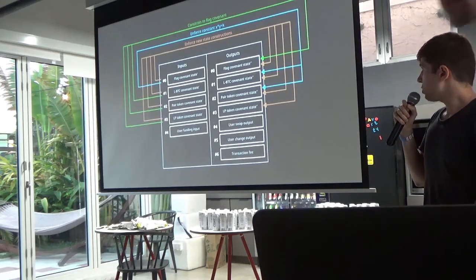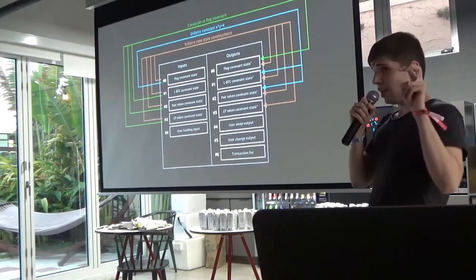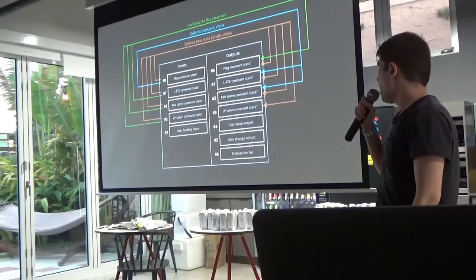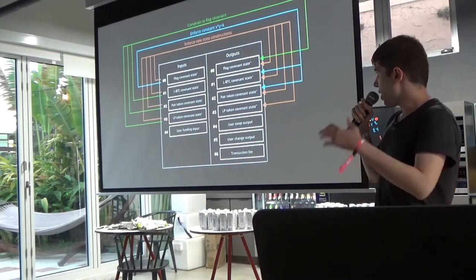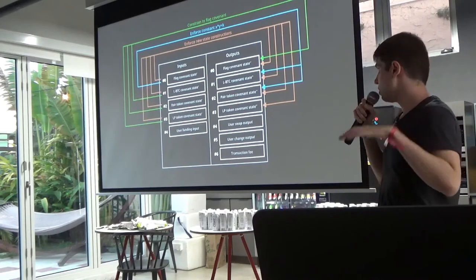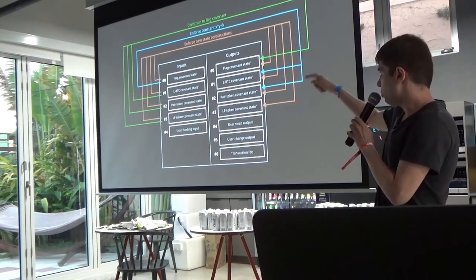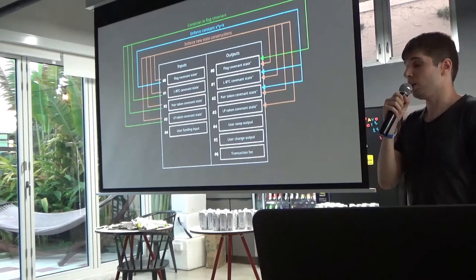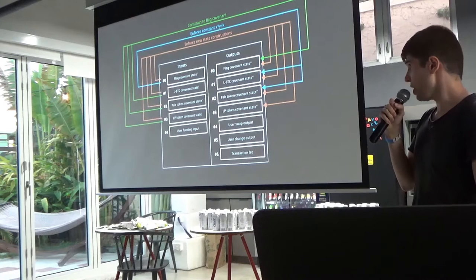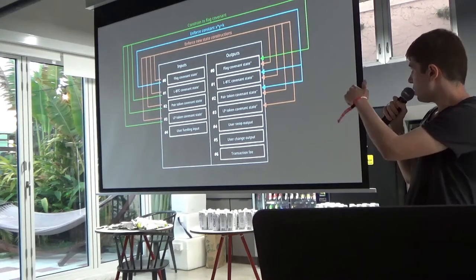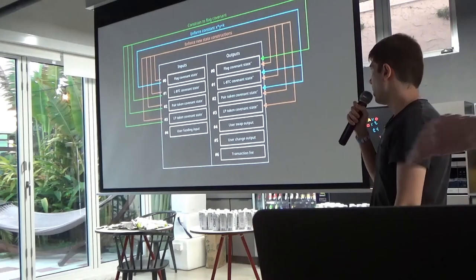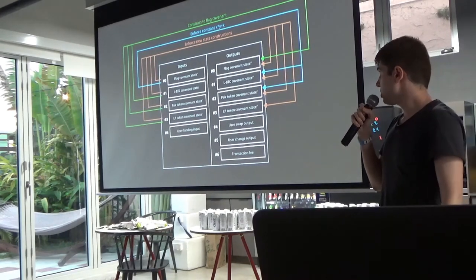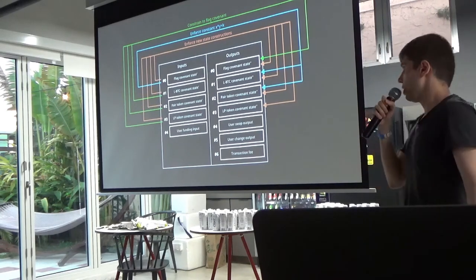The system is based on current covenants, where state floats across inputs and outputs across transactions, up to a 50-transaction limit in the mempool. We have four covenants in a transaction. From index zero to the third index we have flag covenants — a covenant that holds a unique asset with one unit supply, identical to the pool. The first index holds LBTC liquidity, the second holds a pair token such as USDT, LCAT, or EURX, and the third holds LP token liquidity with a predetermined supply.